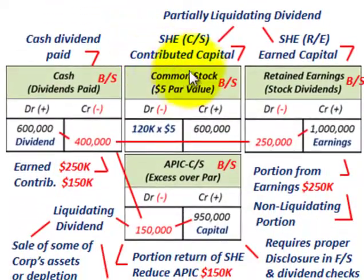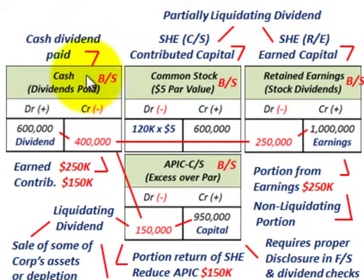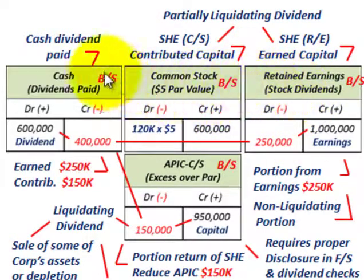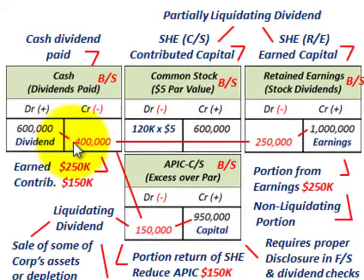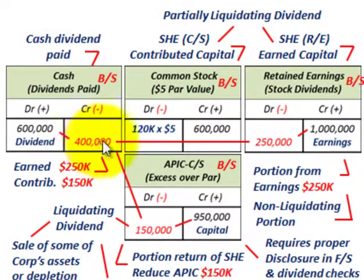This is what we call a partially liquidating dividend. We have our cash account, common stock, additional paid-in capital to common stock, and retained earnings. We start with $600,000 in cash, so we can meet this $400,000 dividend payment to the stockholders. Where does that $400,000 come from?